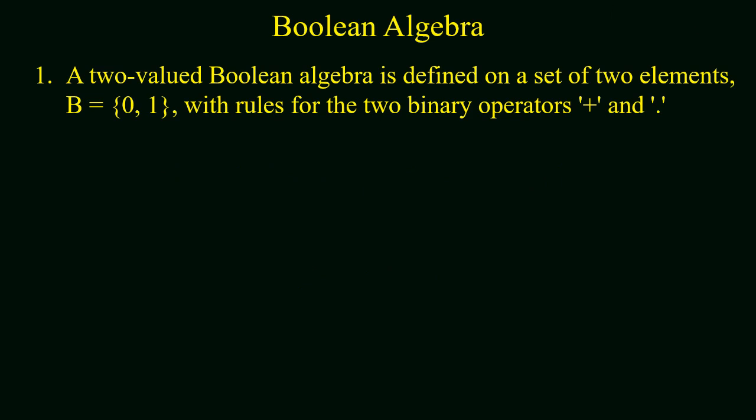A two-valued Boolean algebra is defined on a set of two elements. These elements are 0 and 1, with rules for two binary operators: addition and multiplication.